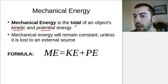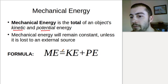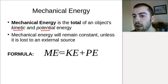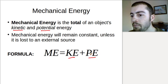The total mechanical energy is going to stay the same. The formula for mechanical energy, since it's the sum of kinetic and potential energy, is just kinetic energy plus potential energy.